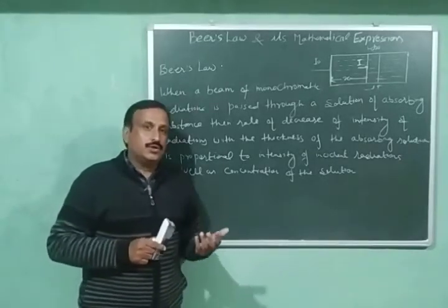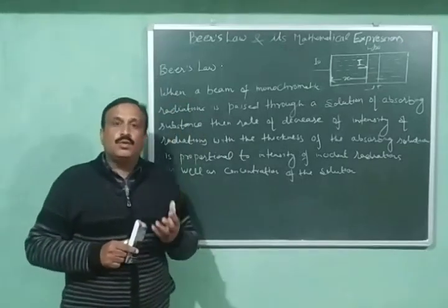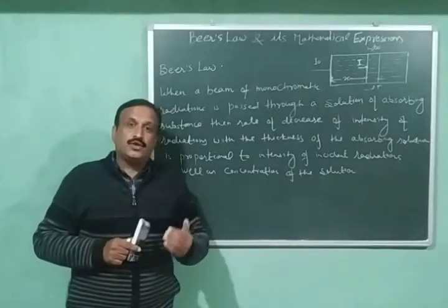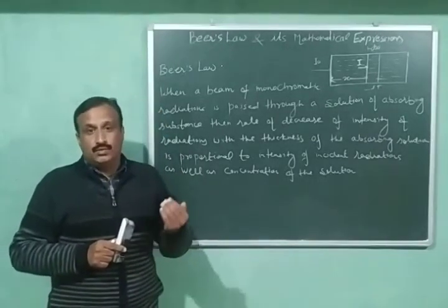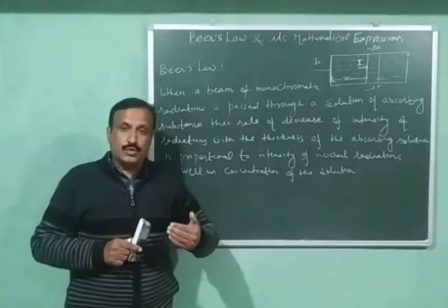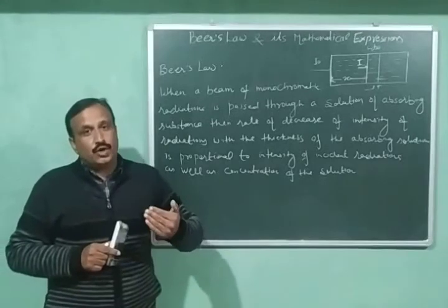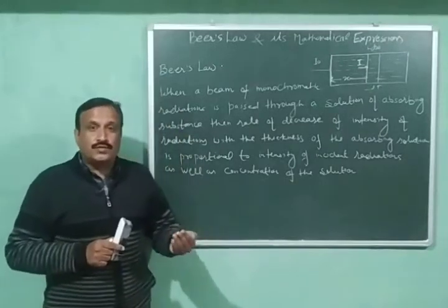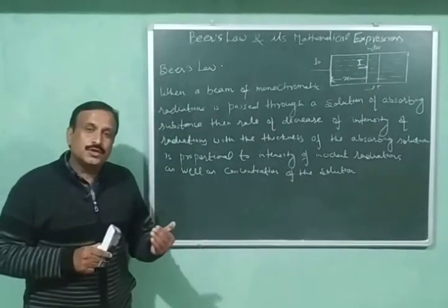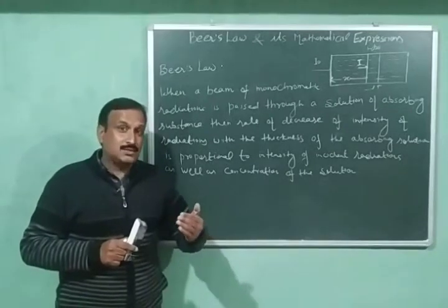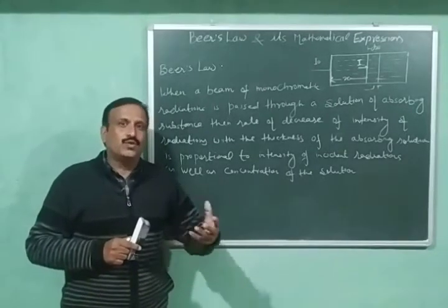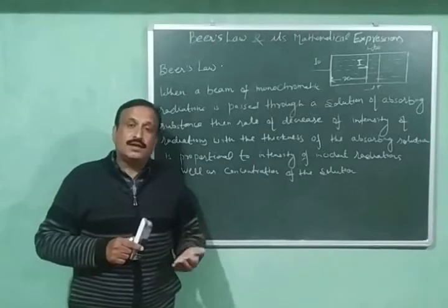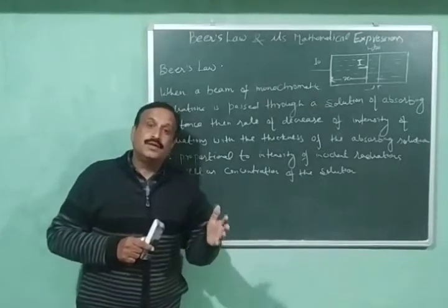According to Beer's law, when a beam of monochromatic radiation is passed through a solution of an absorbing substance, the rate of decrease of intensity of the radiations with the thickness of the absorbing solution is proportional to the intensity of incident radiations as well as the concentration of the solution. So the rate of decrease is not only proportional to intensity as in Lambert's law, but also to the concentration.